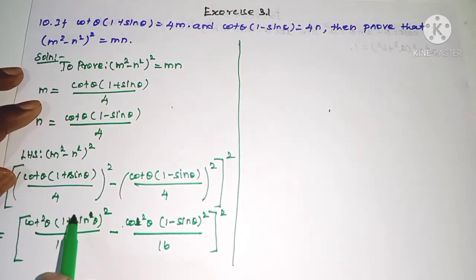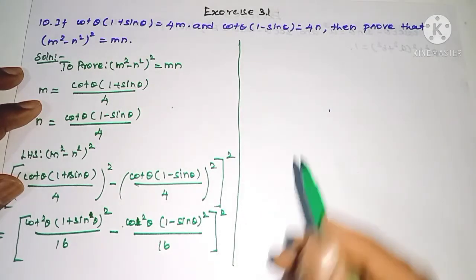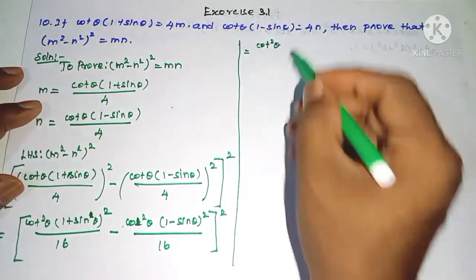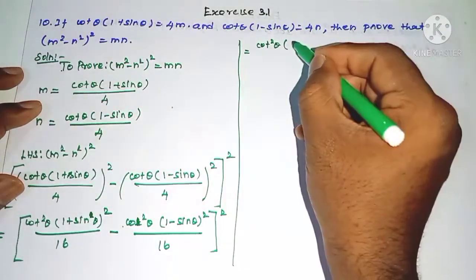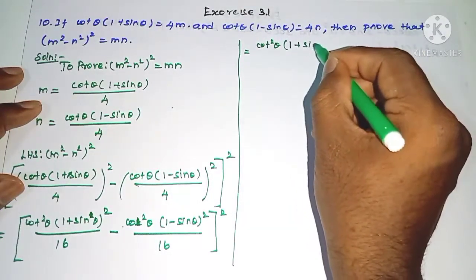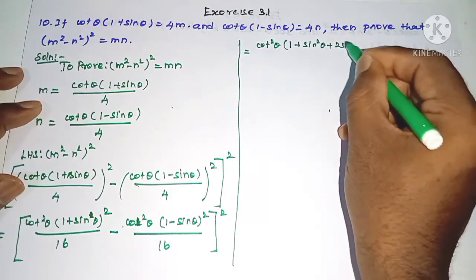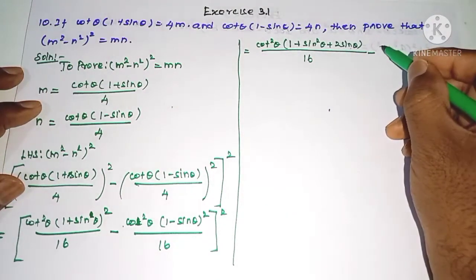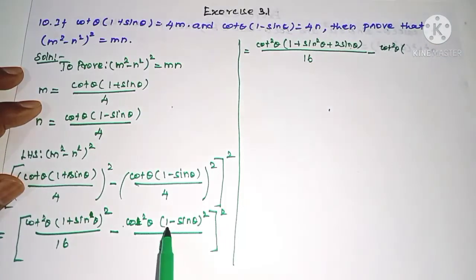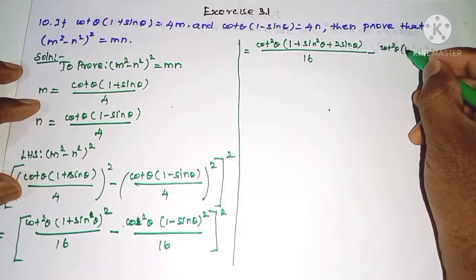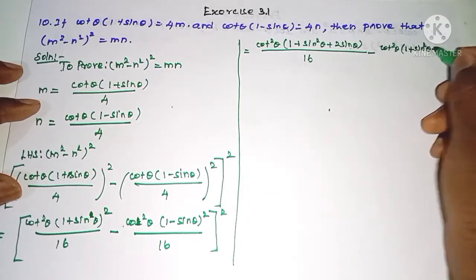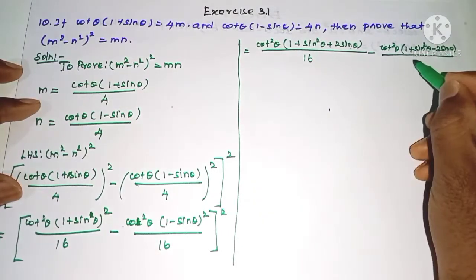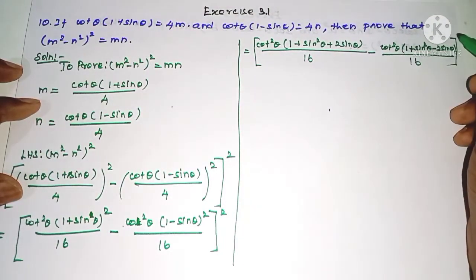This uses the (a + b)² formula and the (a - b)² formula. Applying these: we get cot²θ / 16 multiplied by [(1 + sin θ)² - (1 - sin θ)²], expanding to 1 + sin²θ + 2sinθ minus 1 + sin²θ - 2sinθ — the whole divided by 16.